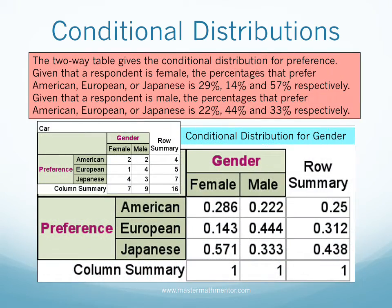The conditional percentage distribution can also be viewed in terms of the condition of gender. Given that someone is a female, two out of seven or 29 percent prefer American cars, one out of seven or 14 percent prefer European cars, and 57 percent prefer Japanese cars. Given that someone is a male, two out of nine or 22 percent prefer American cars, four out of nine or 44 percent prefer European cars, and 33 percent prefer Japanese cars.